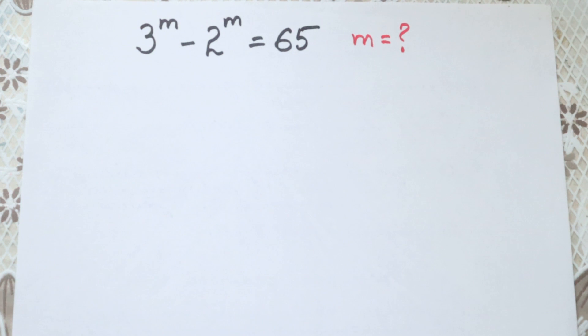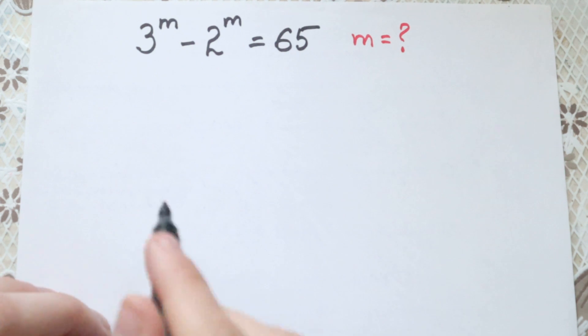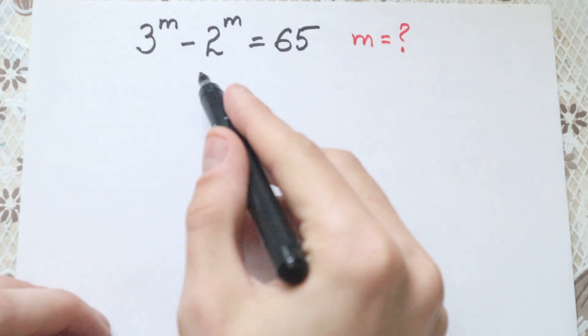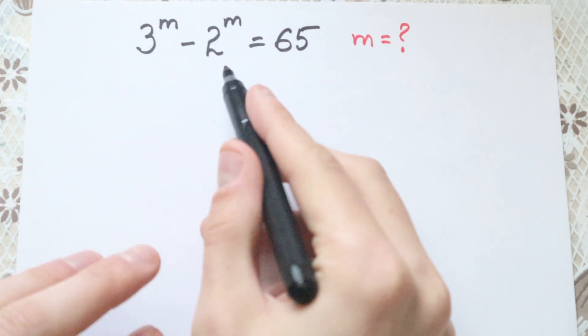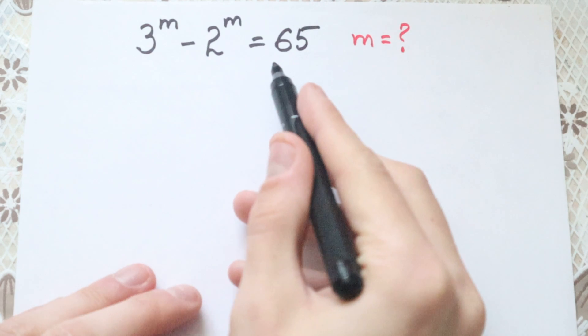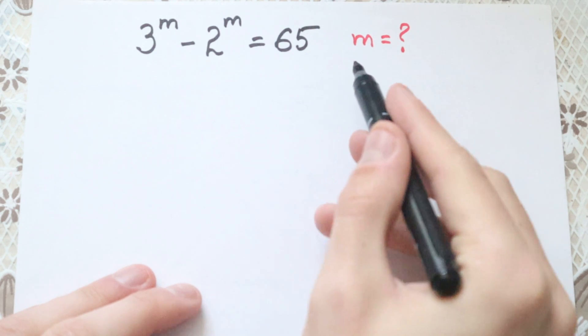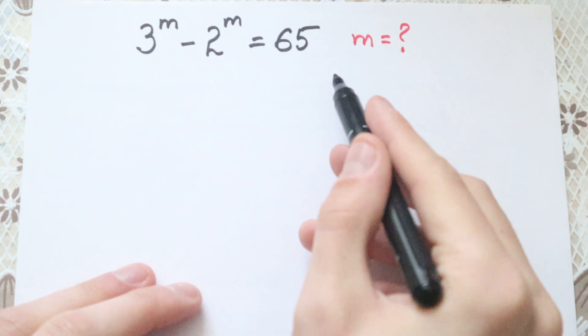Hello everyone, happy to see you here. In this video we are going to solve this interesting algebra problem. We have a really interesting exponential equation: 3 to the power m minus 2 to the power m equal to 65, and we need to find m.